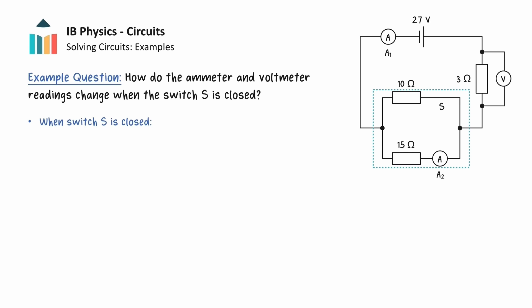In addition, current will split at the junction, so the reading on ammeter 2 will be different from the reading on ammeter 1. Let's begin by calculating the total resistance of the circuit.